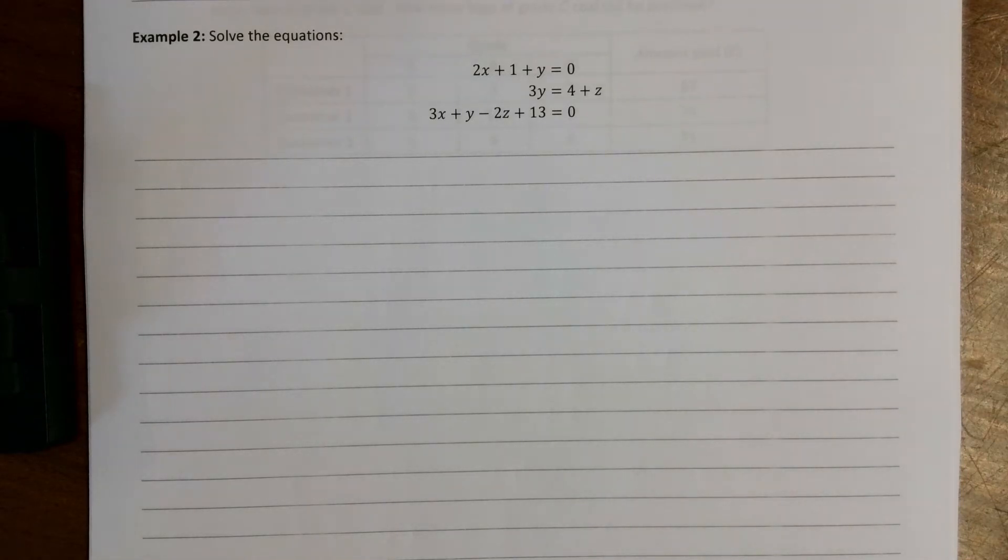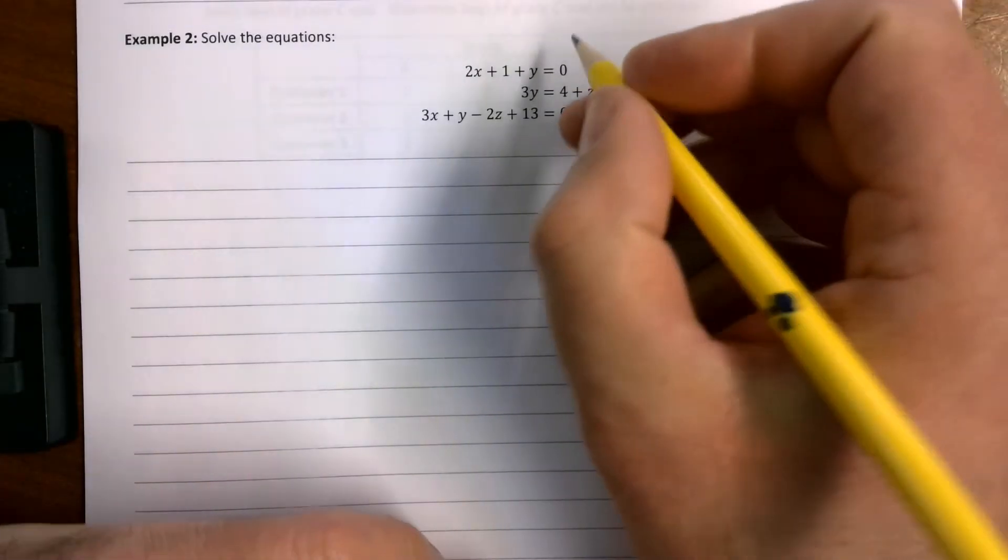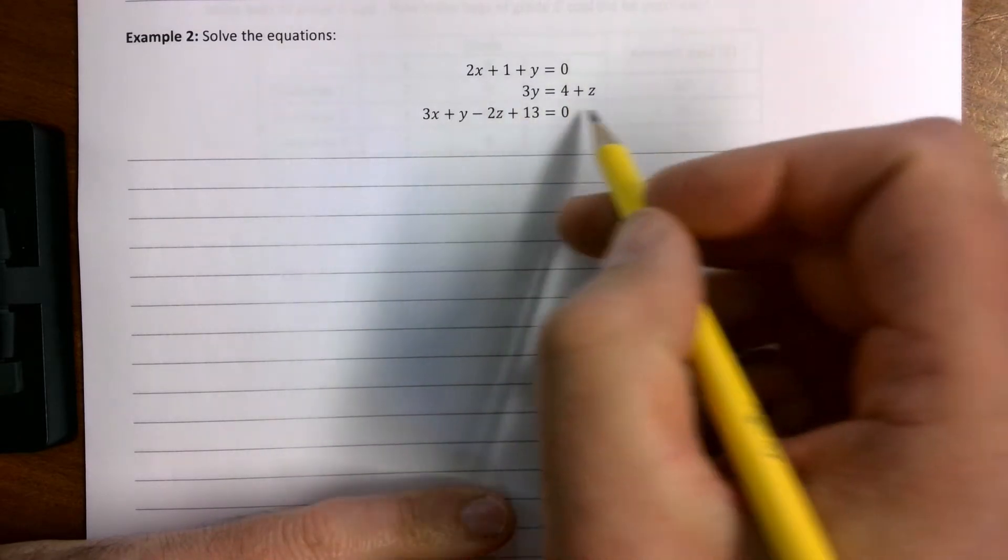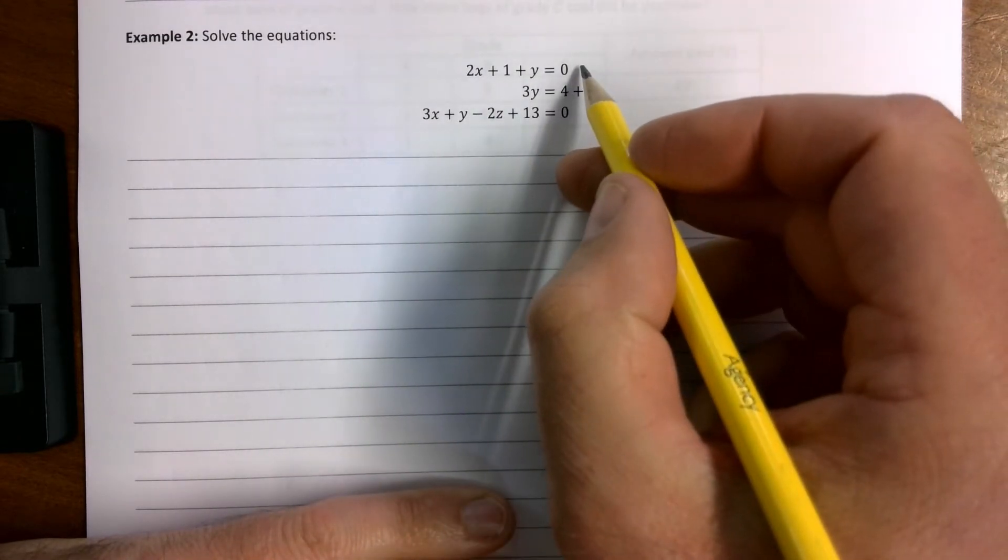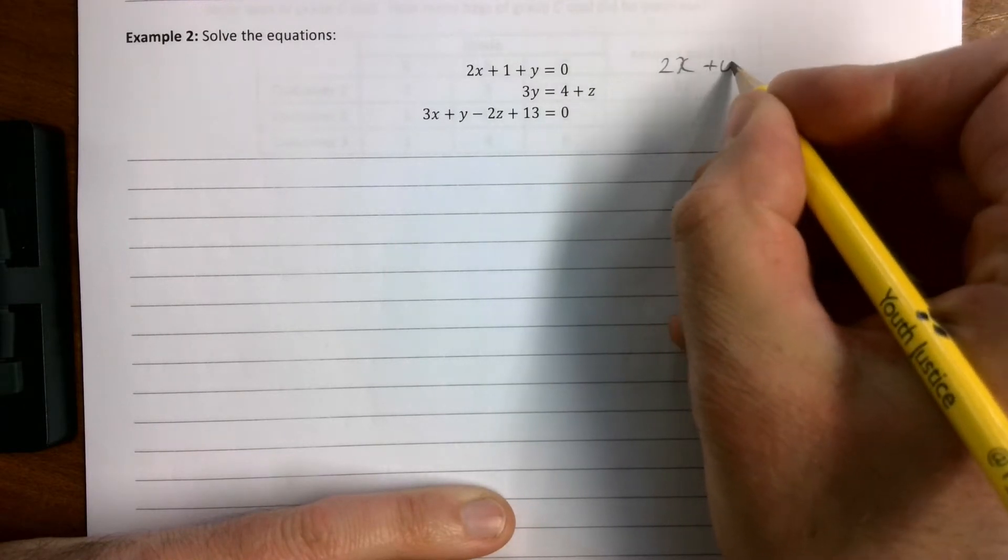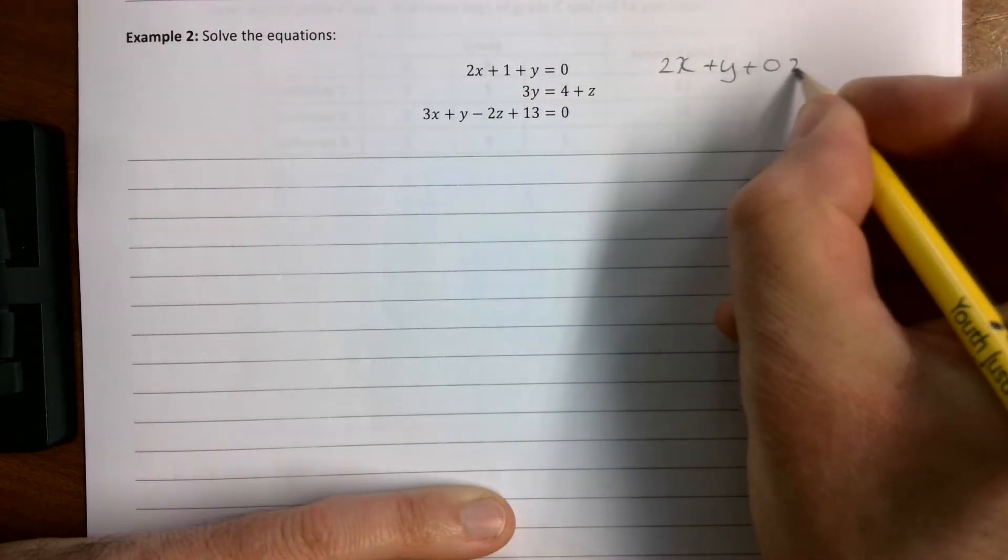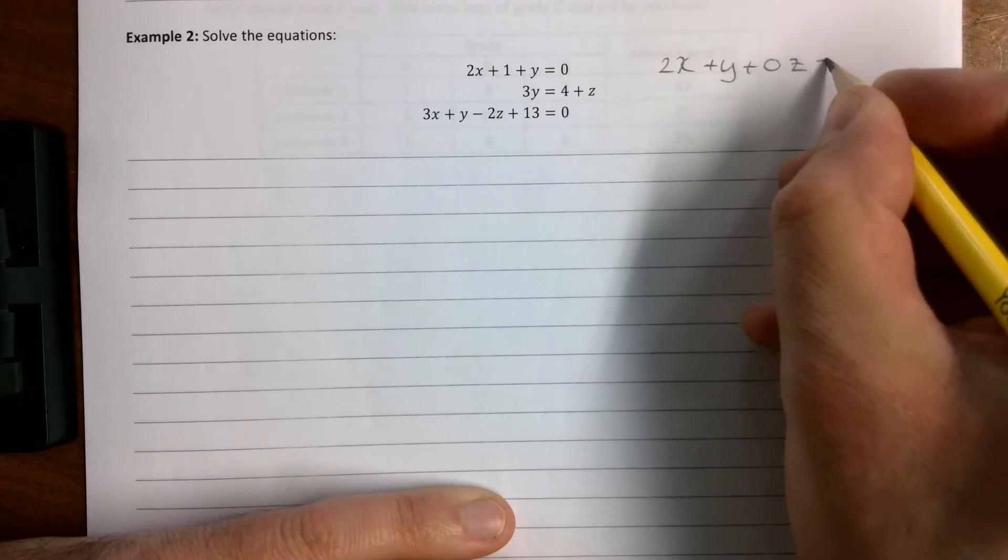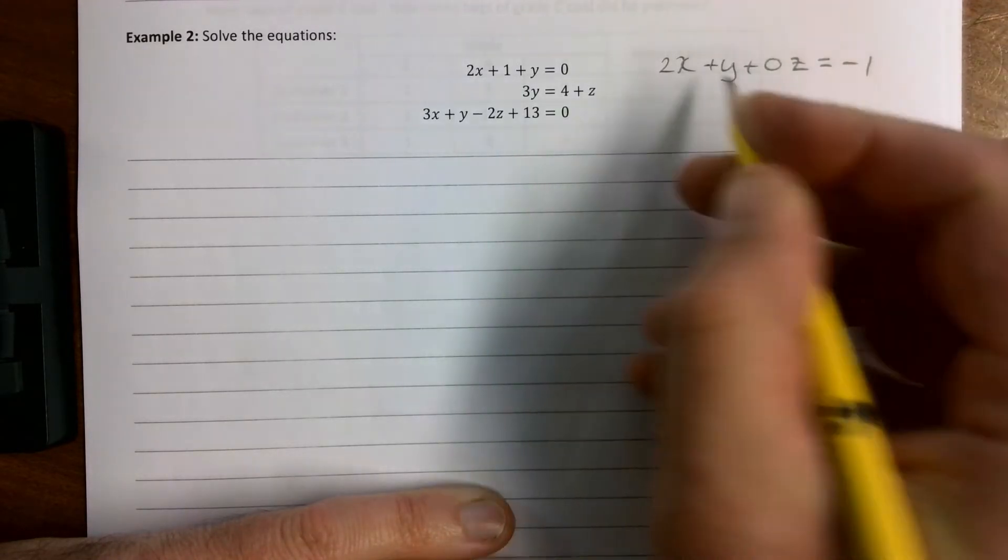This is GCSE Further Maths Pure, we're on chapter 3, equations on 3 unknowns, and this is example 2. These are a bit funny looking so I'm going to rearrange these to get them in the format that we like. So we're going to go for 2x plus y plus 0z equals minus 1, hopefully you're happy with that.